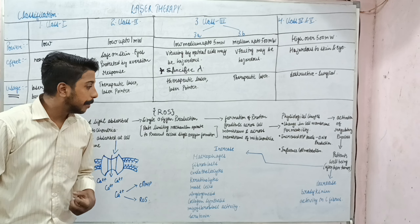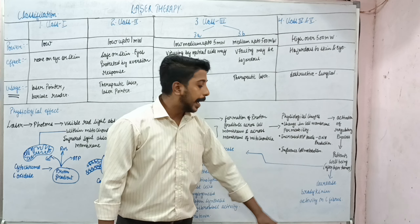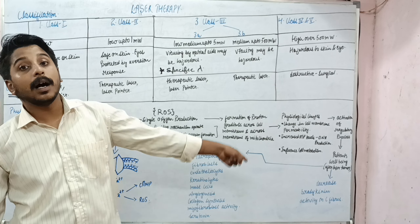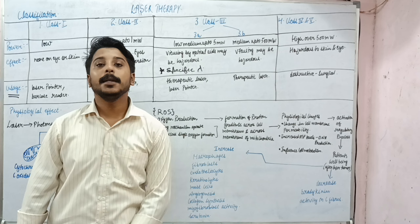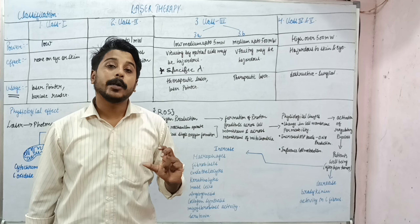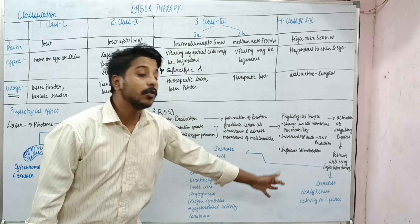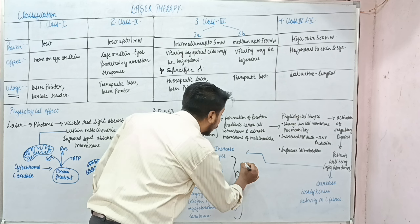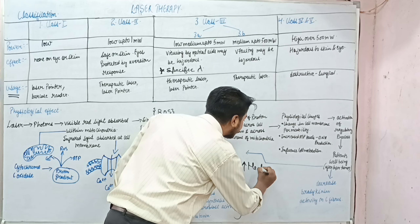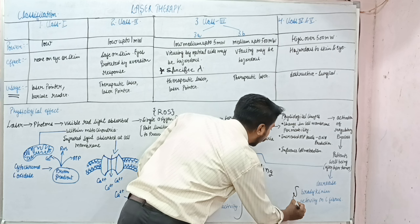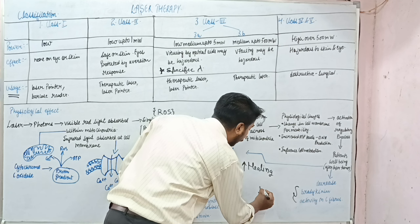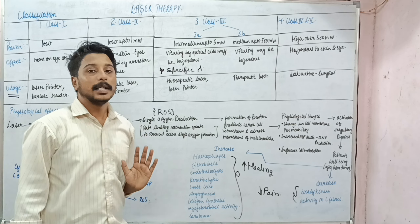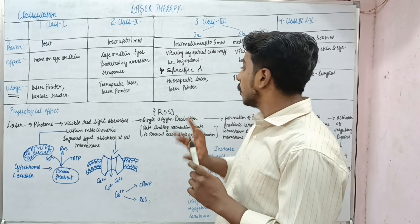The net effect is increased tissue repair. At the same time, there is a decrease in bradykinin and in the activity of C-fibers. C-fibers are the fibers that carry pain signals, and bradykinin is an important substance involved in pain perception. Since these are reduced, pain will be reduced. So overall: healing is increased and pain is decreased.